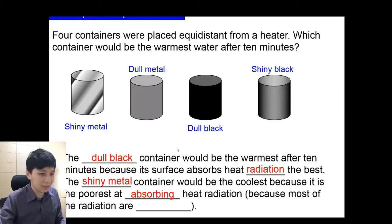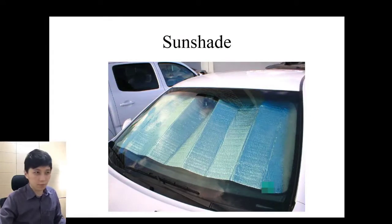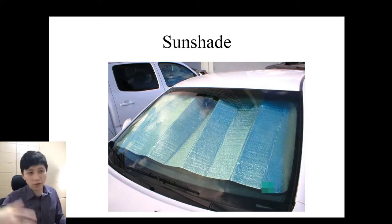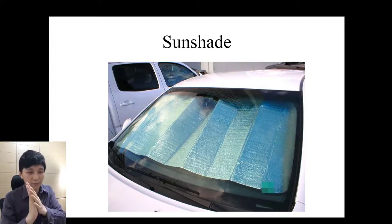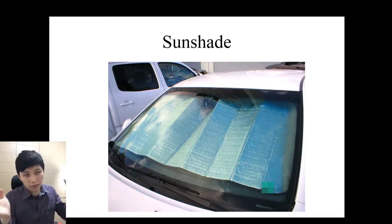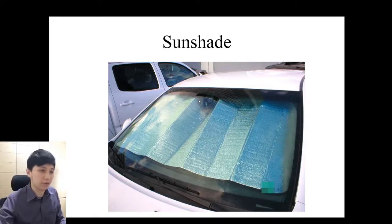This is a sunshade — you've probably seen people putting these in car windshields when they park. The purpose is to reflect sunlight so that when they return, the seat is not boiling hot. This is a practical application of radiation — specifically the idea that shiny, reflective surfaces absorb less radiation.